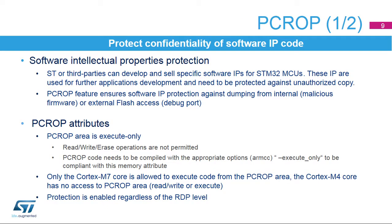PCROP means proprietary code readout protection. Third parties may develop and sell specific software IPs for STM32 microcontrollers, and original equipment manufacturers may use them when developing their own application code. In order to protect the software intellectual property, the code must not be copied or read. The PCROP's purpose is to protect the confidentiality of third-party software intellectual property code against malicious users independently of the RDP level setting.